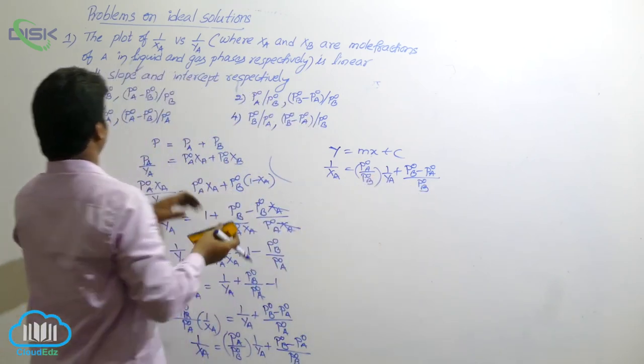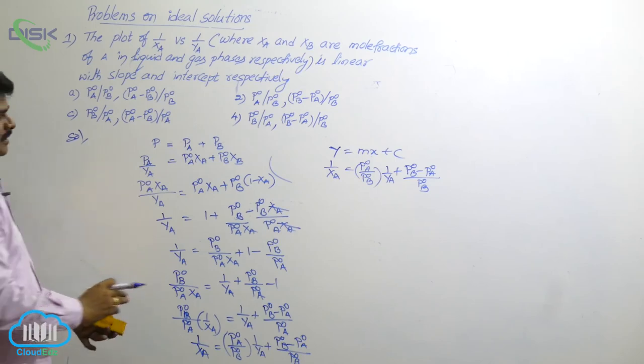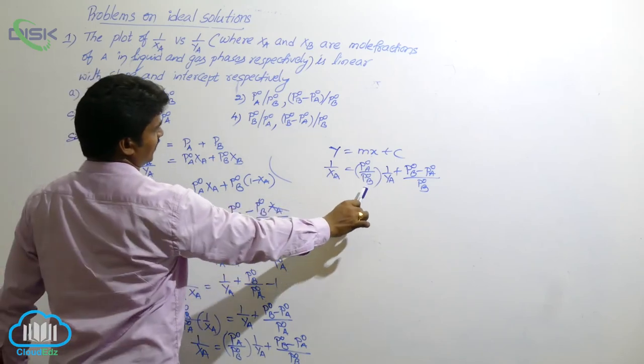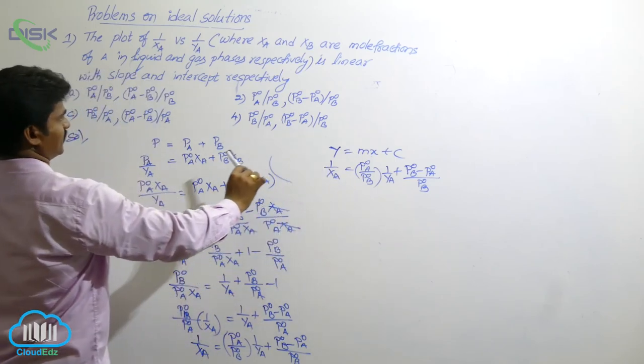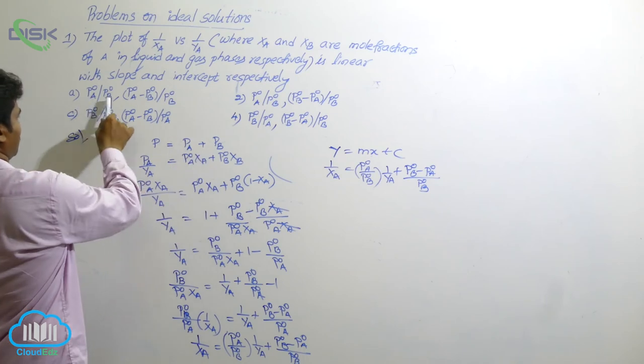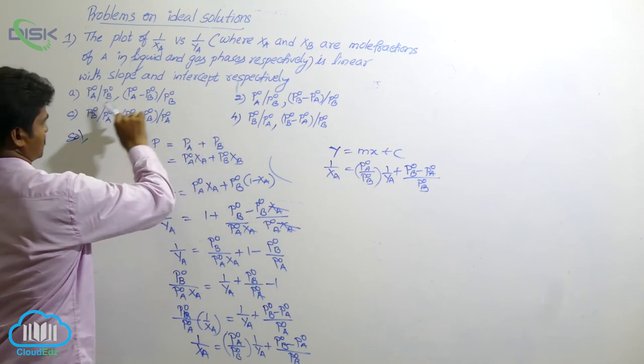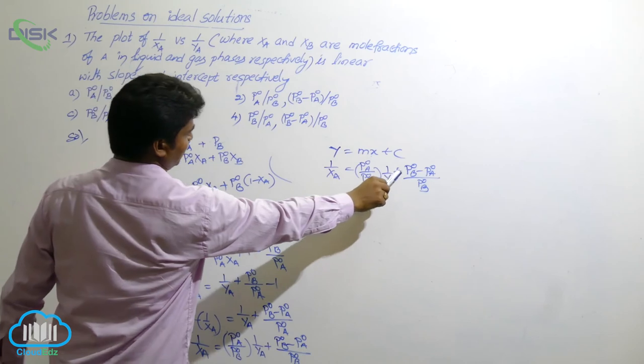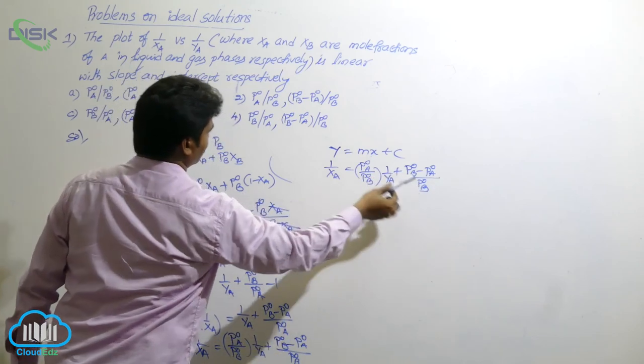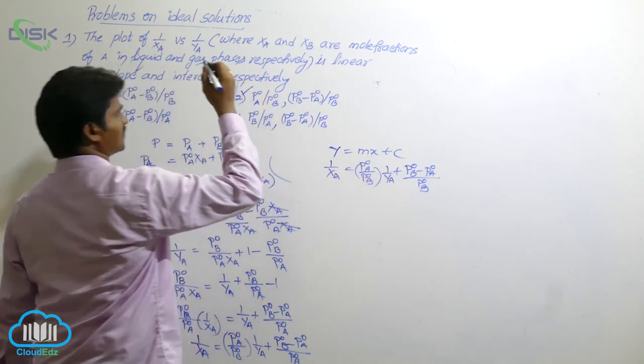Now compare the options. Slope is P naught A by P naught B. Slope is P naught A by P naught B. Here should be two options. But intercept is P naught B minus P naught A by P naught B. So second option is the answer.